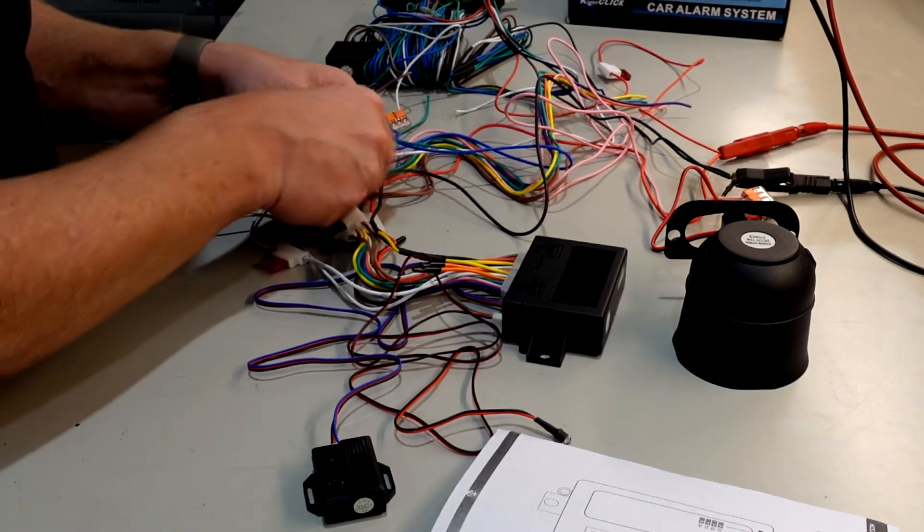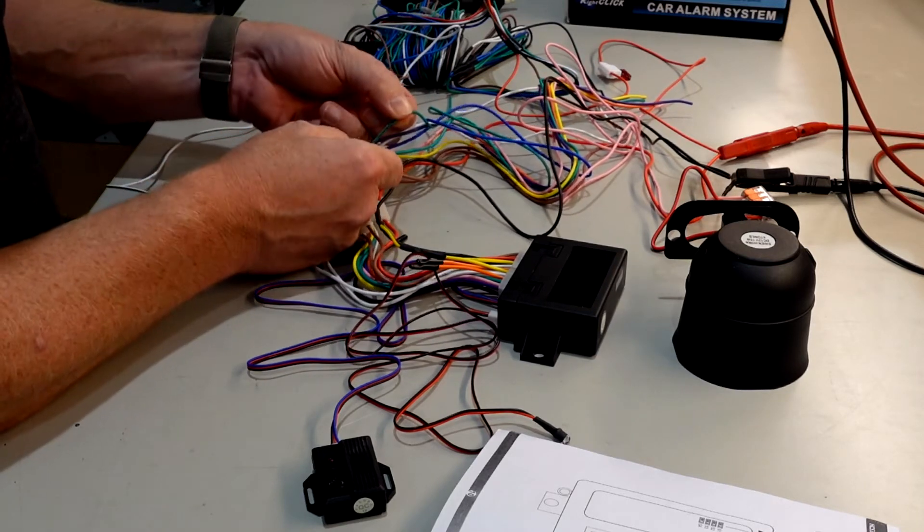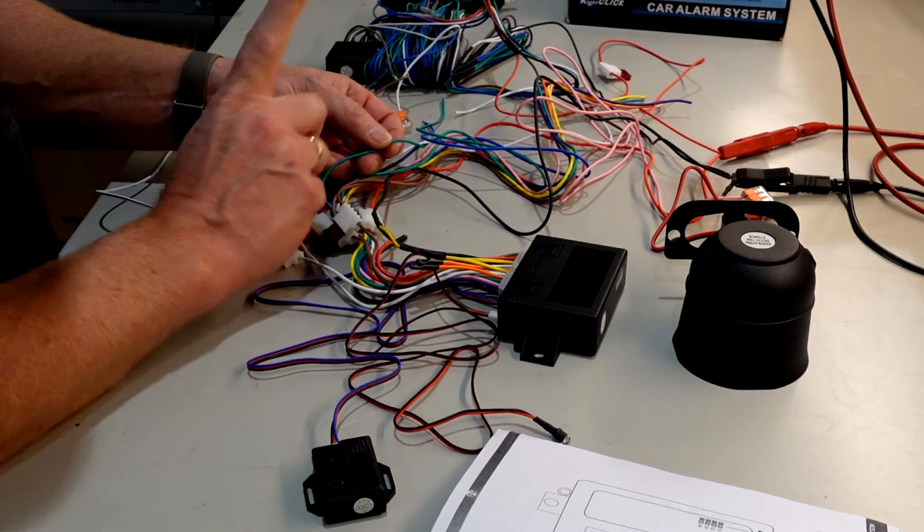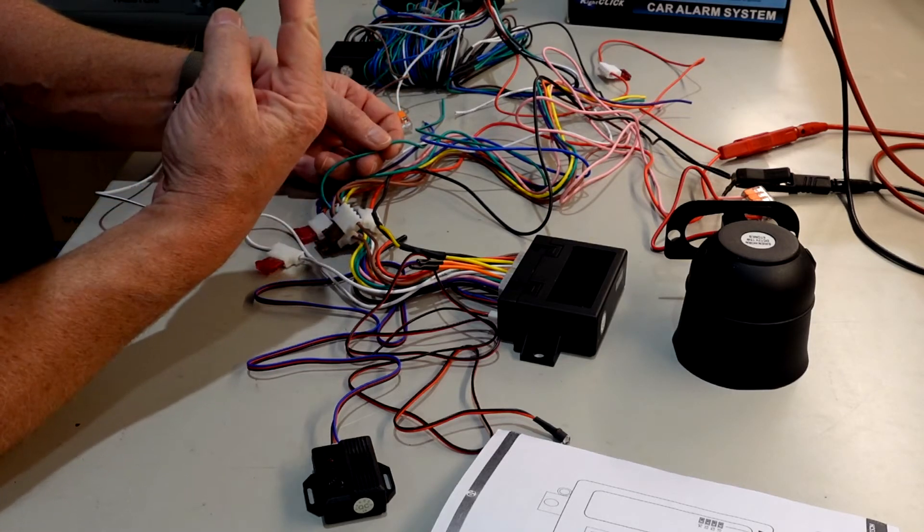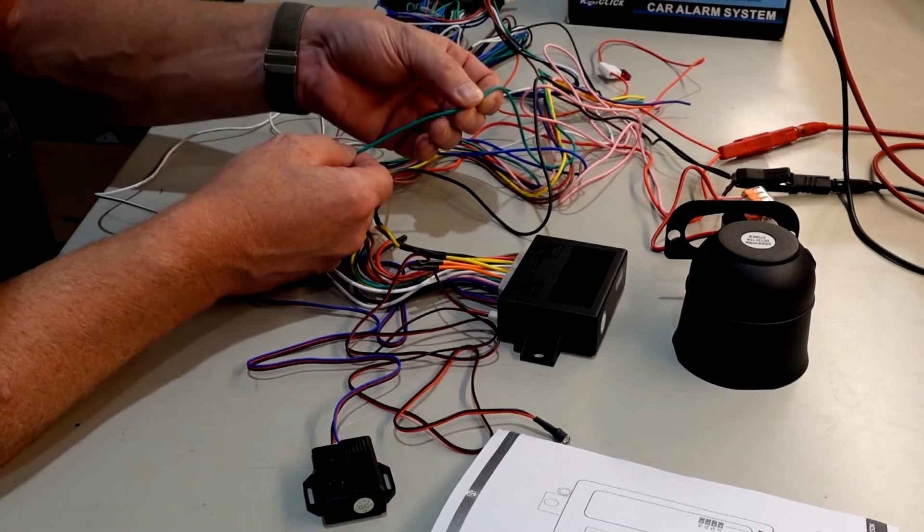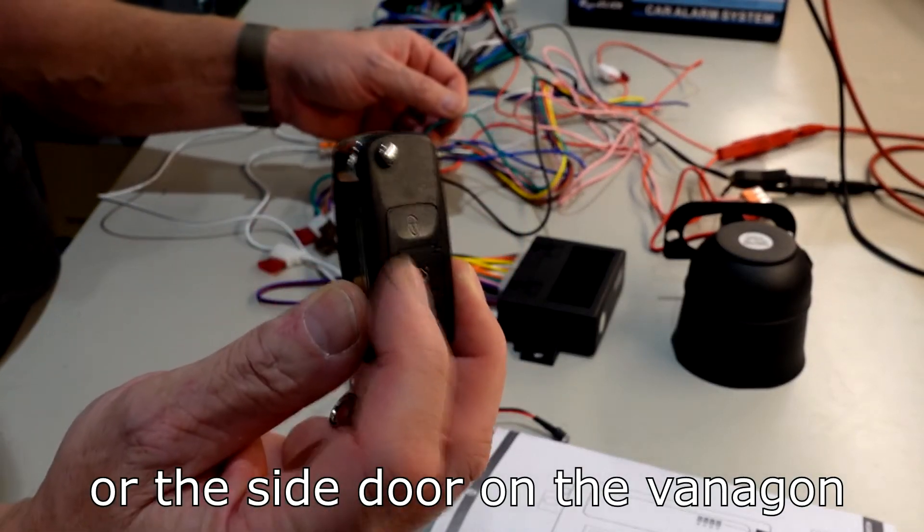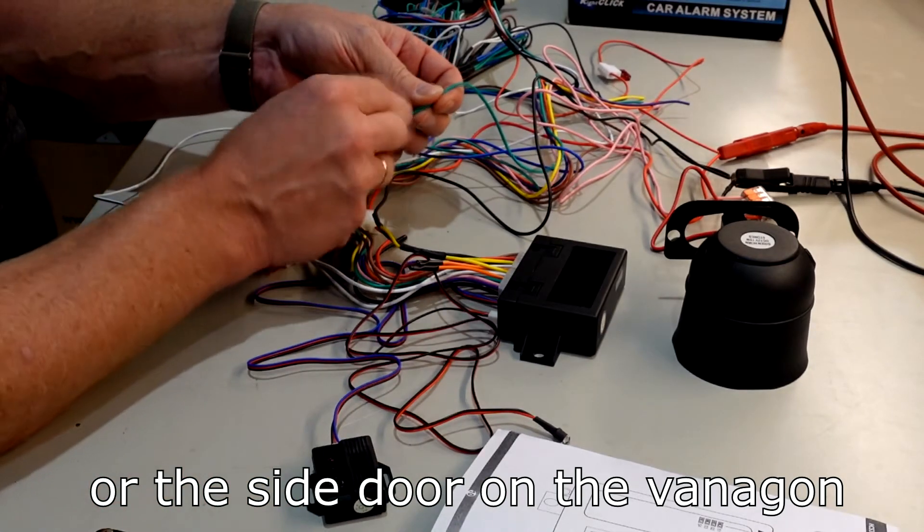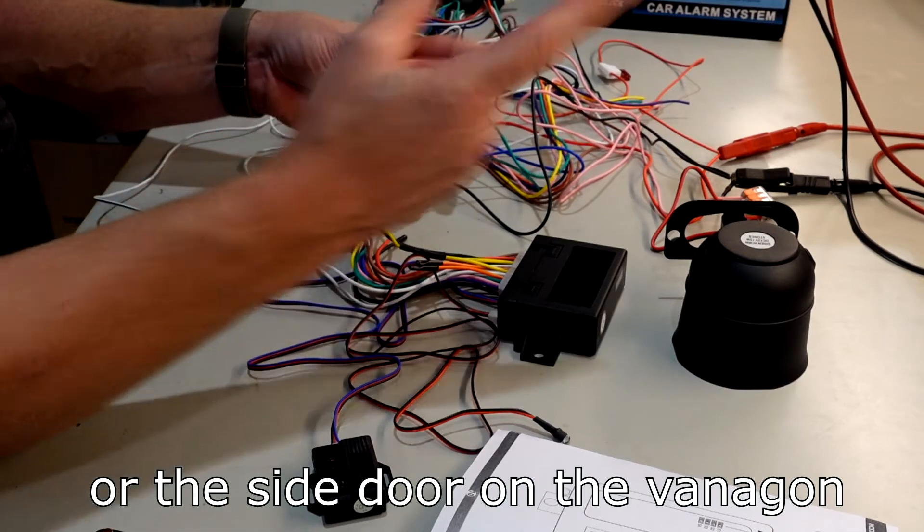You have a green and black, that one goes to the dome light. If you want the dome light to trigger when you disarm the alarm, the light will come on in the car. The green one is a special wire to open the trunk. You have a trunk symbol on the key here. If you press that one, you will activate I think it's minus on this cable, so you need a relay in the trunk and the relay opens the trunk.